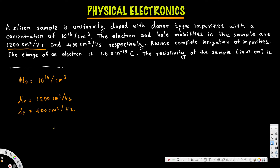The question asks for resistivity of the n-type semiconductor. We calculate rho n-type as the reciprocal of conductivity. The n-type conductivity sigma n is given by the formula: sigma n equals nn times q times mu n plus pn times q times mu p.